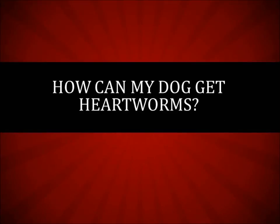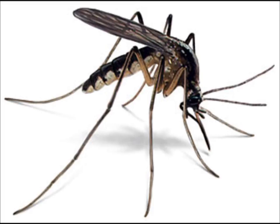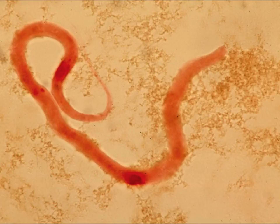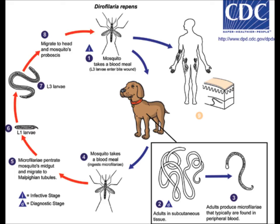Many pet owners ask how their dog can become infected by heartworms. In short, it's from mosquitoes. Adult female heartworms living in an infected dog or other host release their young, called microfilaria, into the bloodstream — that was the microscopic wriggling worm that you saw just a moment ago. Mosquitoes become infected by the microfilaria while taking a blood meal from these infected animals. During the next 10 to 14 days, microfilaria mature to the infective larval stage within the mosquito.